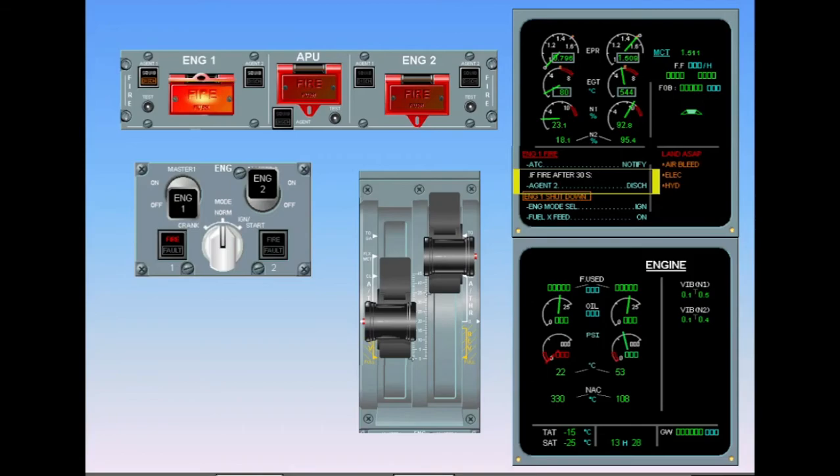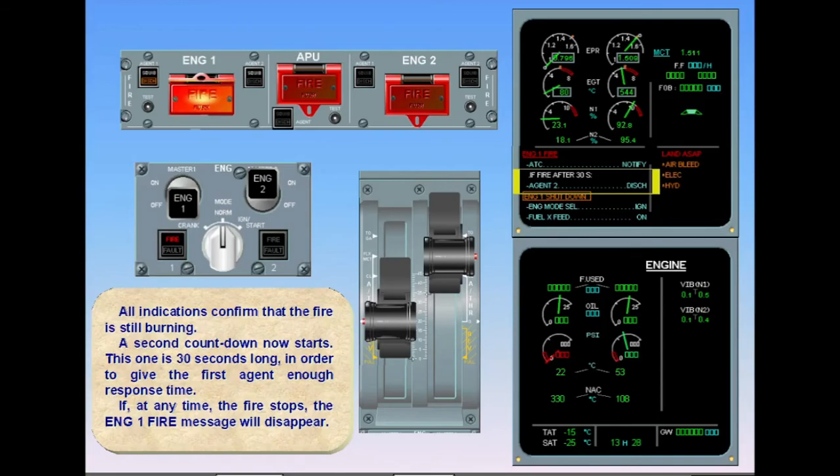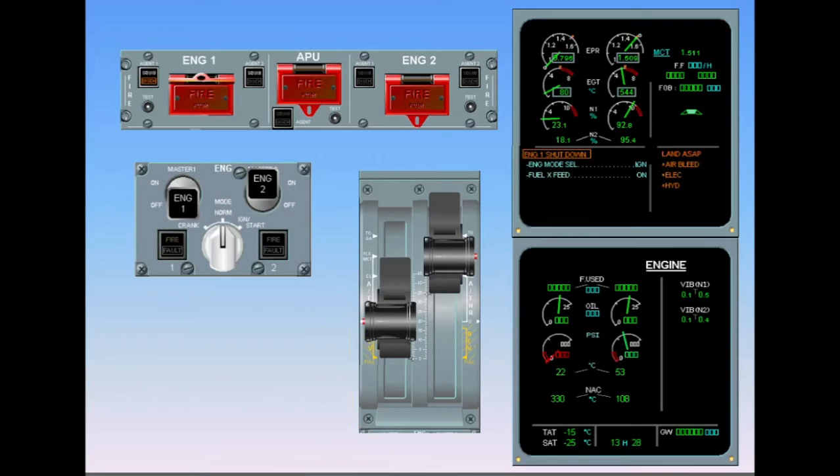If at any time the fire stops, the Engine 1 Fire message will disappear. Agent 1 managed to extinguish the fire. The countdown for Agent 2 has stopped. Notice, the Engine 1 Fire switch is no longer illuminated. The fire light on the engine panel is also extinguished. The engine fire procedure on the ECAM has disappeared.